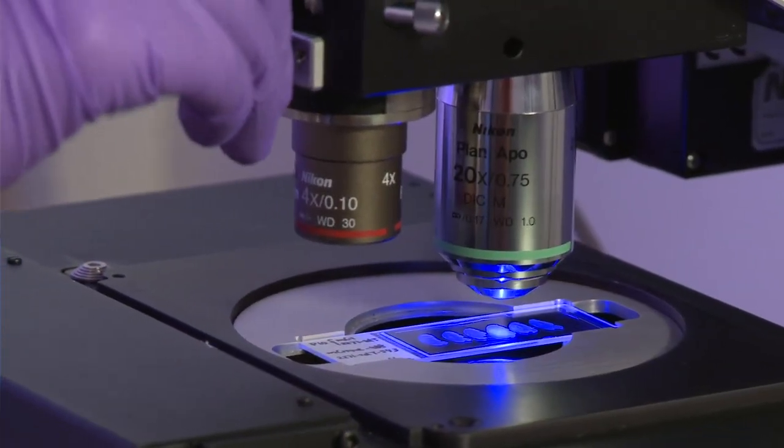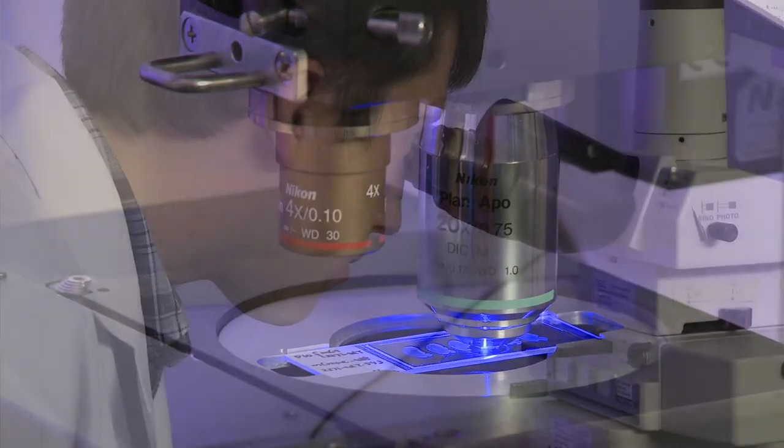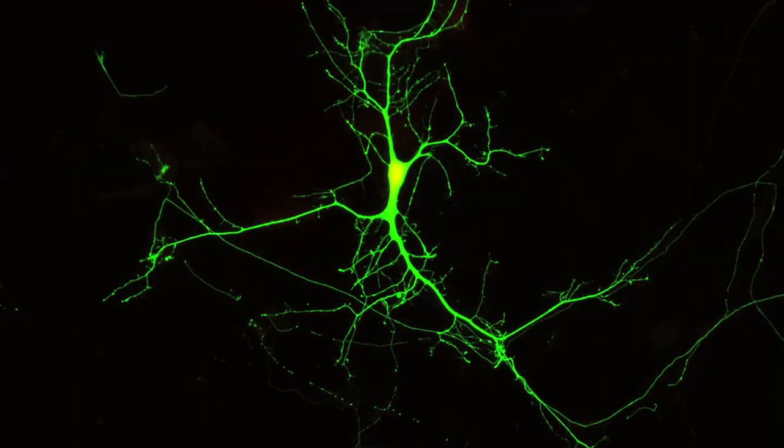For hundreds of years, microscopists have been trying to look at biology. Typically, you can take a glass lens and magnify the light coming from a sample, and you get an image that's bigger, and so you can see it. But there's a problem.